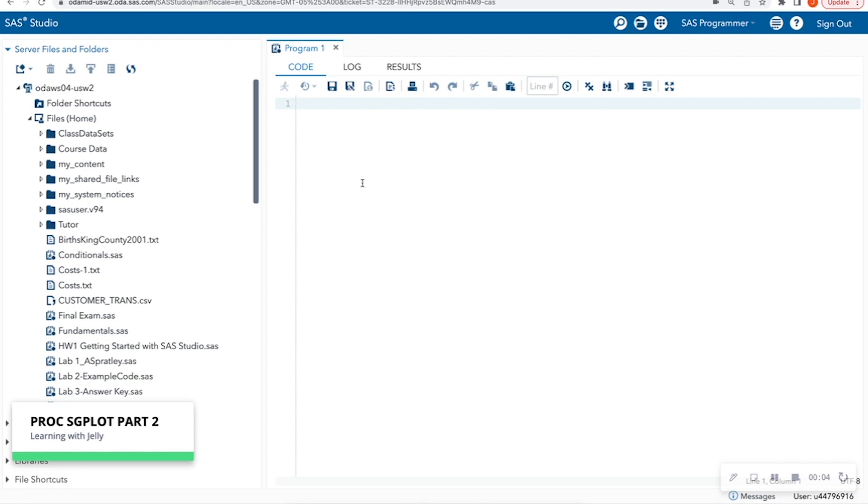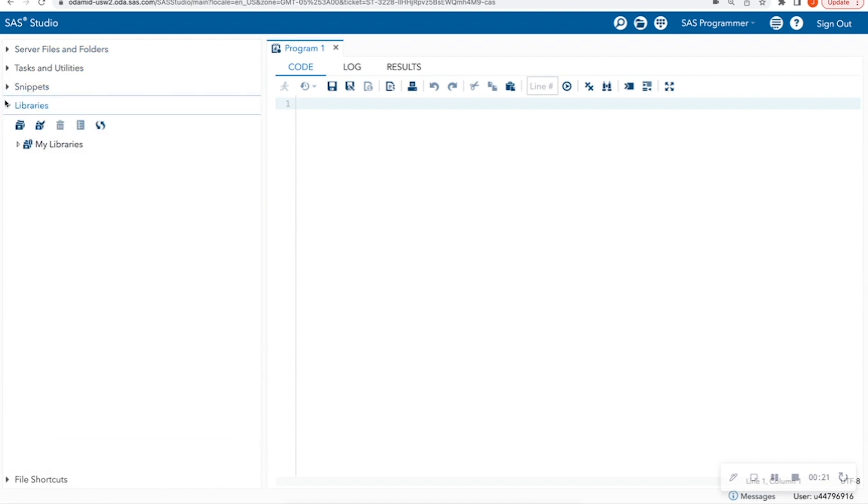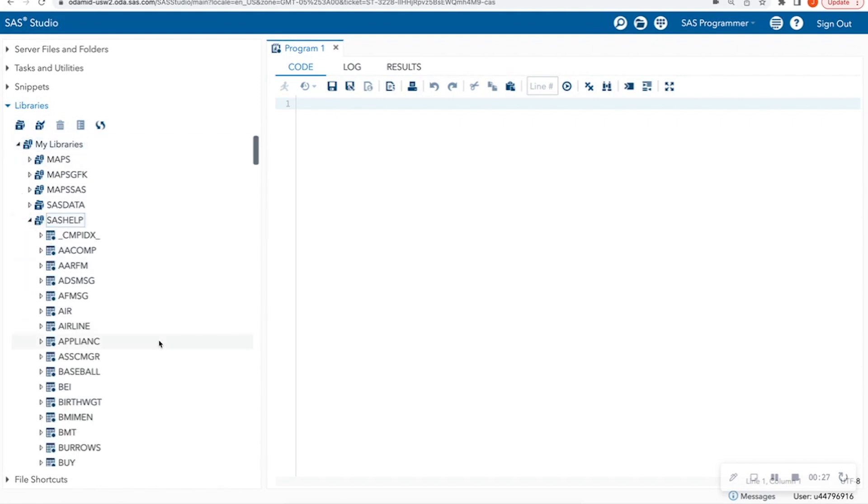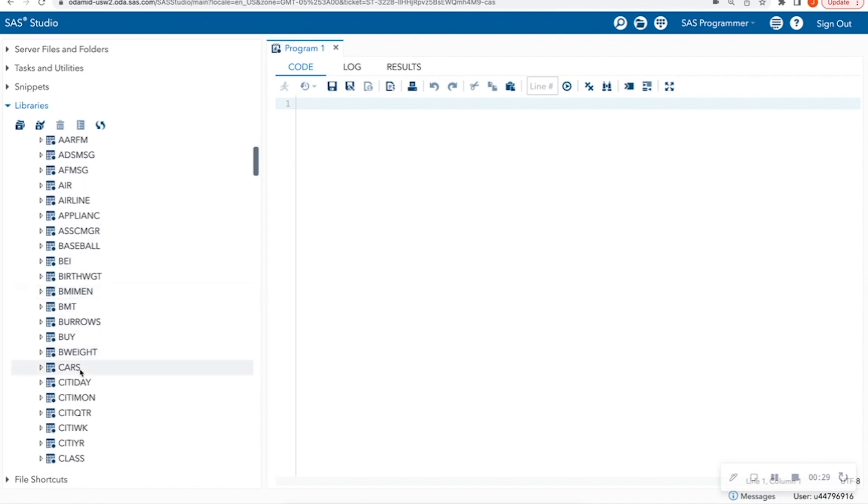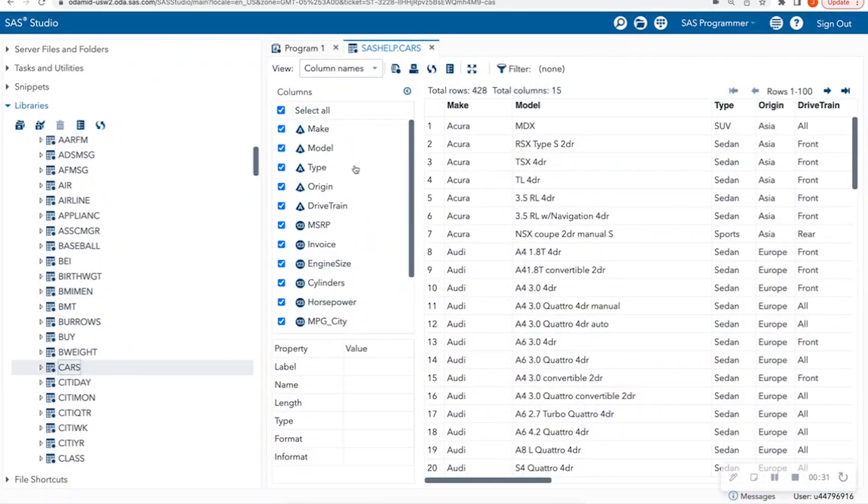So now that we're in the SAS Studio interface on demand for academics, if you do not have access to this interface, I walk you through how to gain free access to this interface in my first video. So I'm just going to expand my libraries on the left-hand side, and I'm going to look for that SAS help library. And inside this library, I have the CARS dataset. So I'm just going to double click on that.